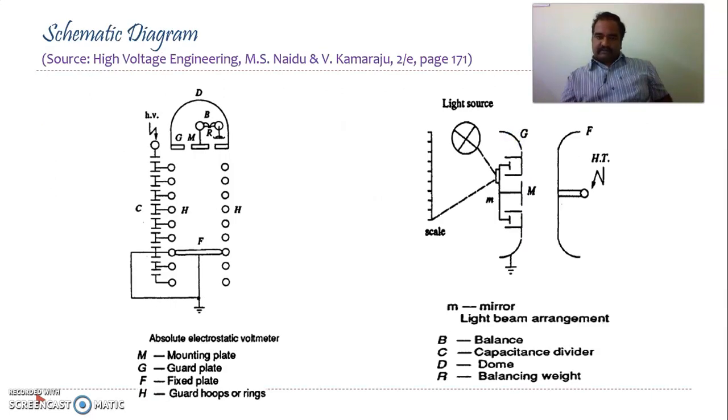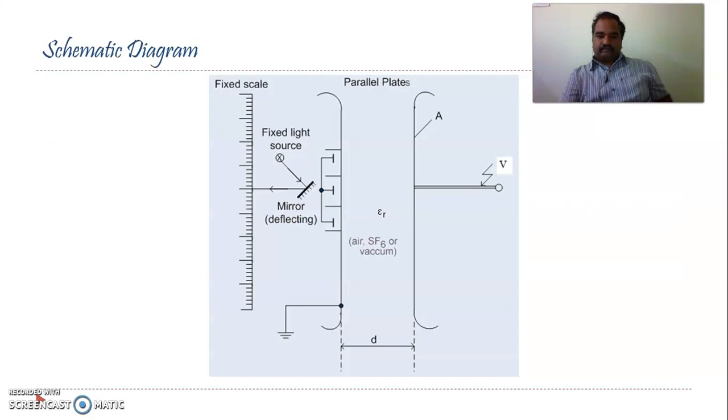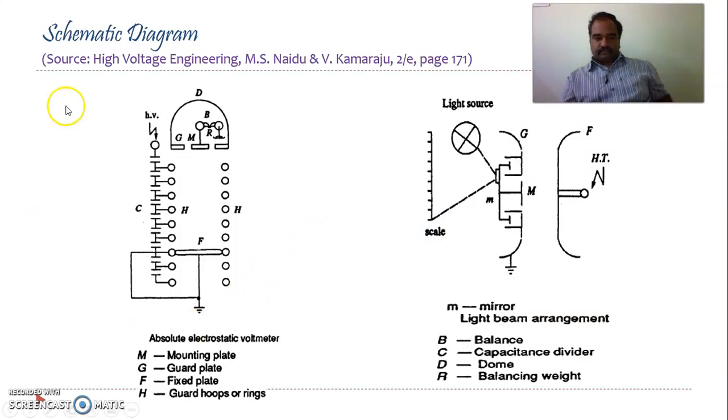Since for working of your electrostatic voltmeter, we do require one fixed plate and one movable plate. See here, this is your construction. I will show you the features one by one. This is the high voltage terminal, this is your capacitance voltage divider arrangement. F is the fixed plate, M is the moving plate. There are two plates just like a parallel capacitor. M is the moving plate, F is the fixed plate. In between these two, you are supposed to develop an electric field.